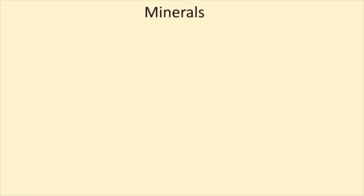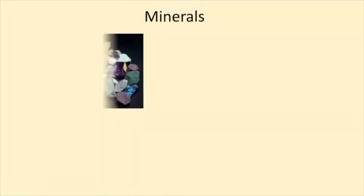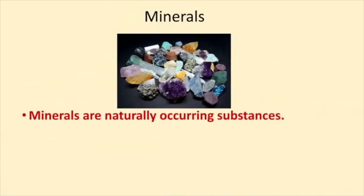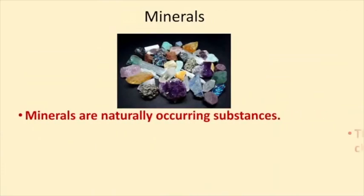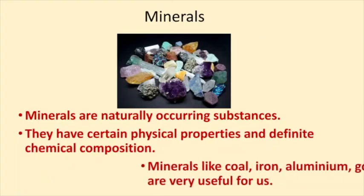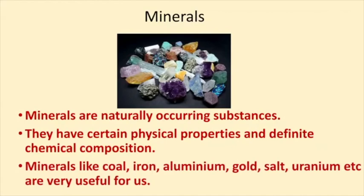Next up, we have minerals which are naturally occurring substances. They have certain physical properties and definite chemical composition. Minerals like coal, iron, aluminum, gold, salt, uranium, etc. are very useful for us.